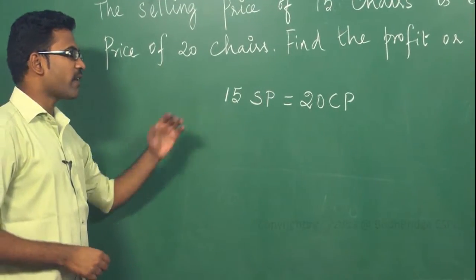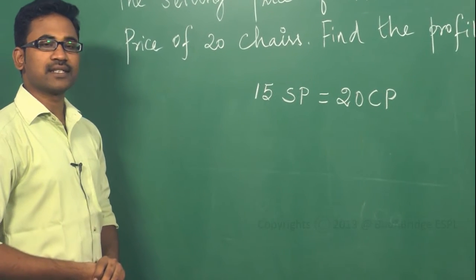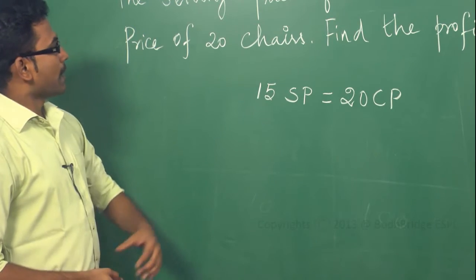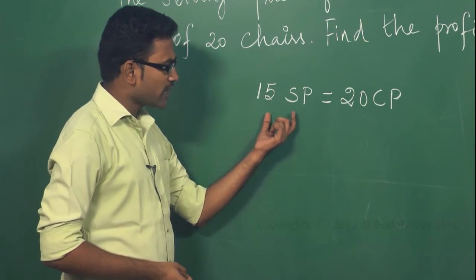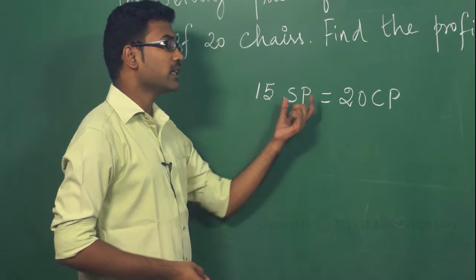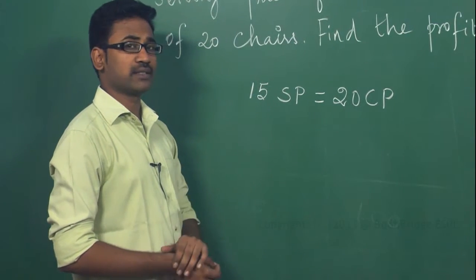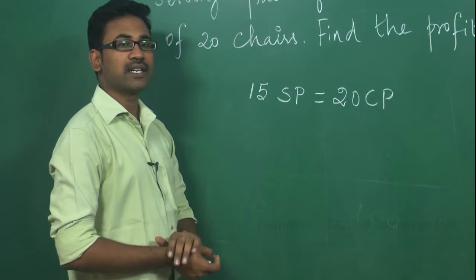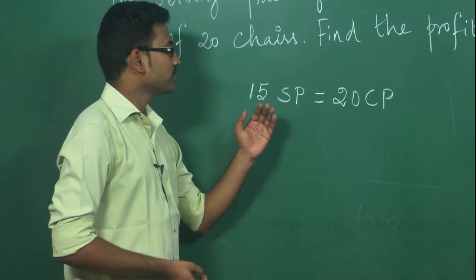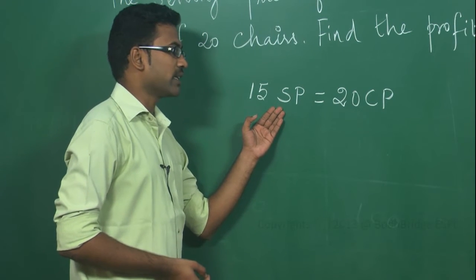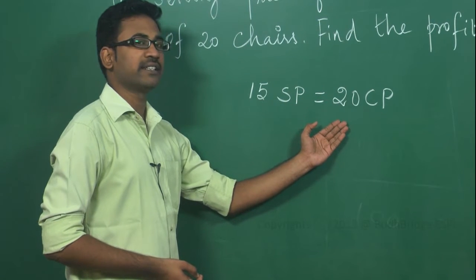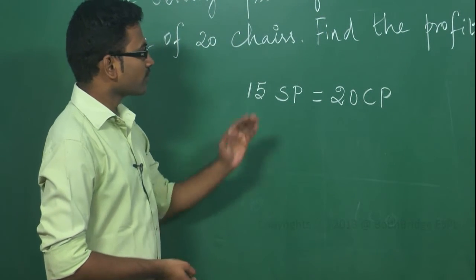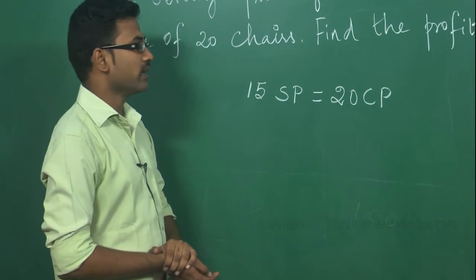From this you can even identify whether the transaction is resulting in a loss or profit. By selling only 15 articles, I'm getting 20 articles cost price. So I can conclude that this transaction resulted in profit, because I'm selling only 15 articles but getting 20 articles worth of cost price in return.